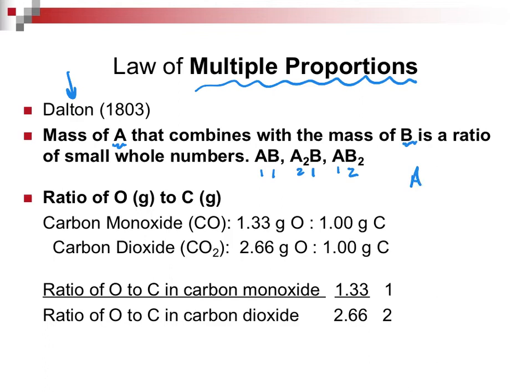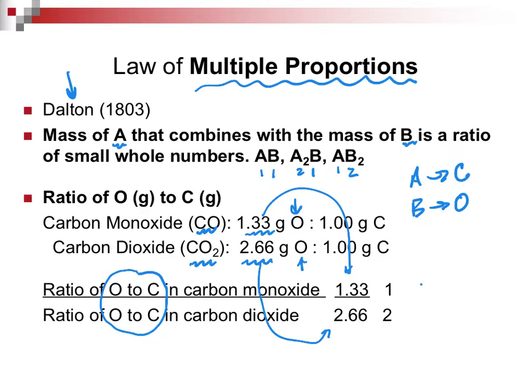Let's say A is carbon and B is oxygen. For carbon monoxide, constant composition gives 1.33 grams of oxygen per gram of carbon. For carbon dioxide, it gives 2.66 grams of oxygen per gram of carbon. The ratio of those two values is 1 to 2 — that's where we get the formulas CO and CO₂.